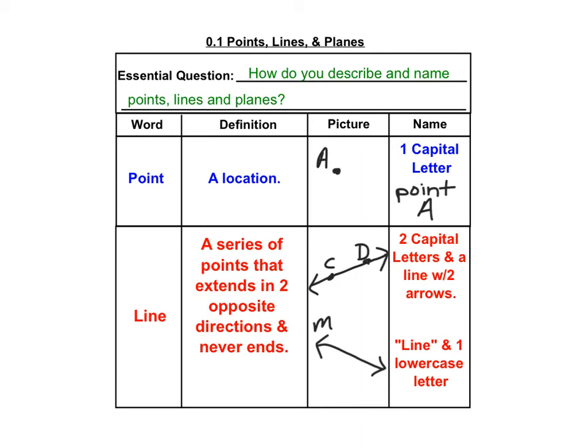All right, so the two different ways that you can name a line are with two capital letters and a line with arrows above it. So this line right here, we could call line CD. And when you denote a line, you put that little arrow above it. You could also switch the order of the letters and call it line DC. Those are the same thing.